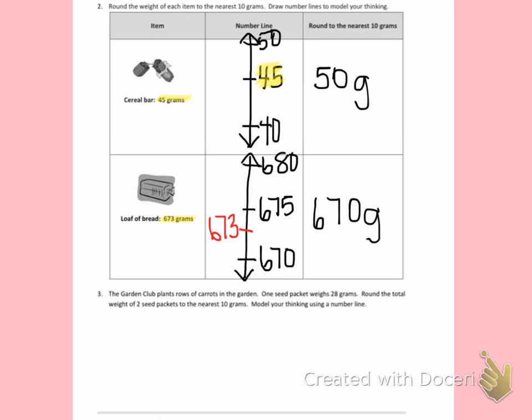Number 3. The garden club plants rows of carrots in the garden. One seed packet weighs 28 grams.